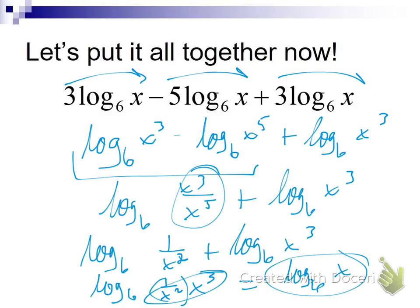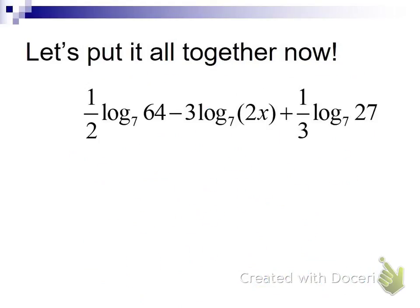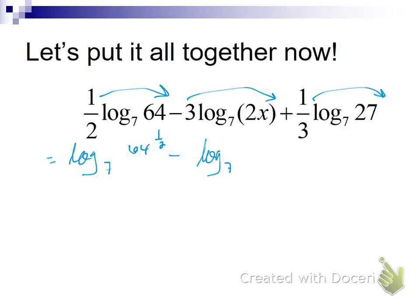Now things get a little more complicated. This first one: I still want to bring coefficients up as exponents, but be careful with some of these. We're going to get log base 7 of 64 to the one-half power, minus log base 7 of (2x)³, plus log base 7 of 27 to the one-third power. Remember: 2x is in parentheses, so the cube applies to both the 2 and the x.